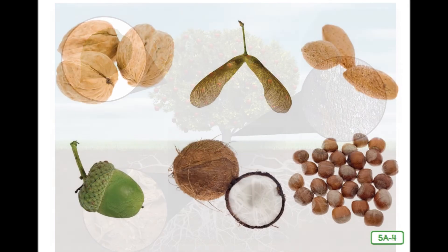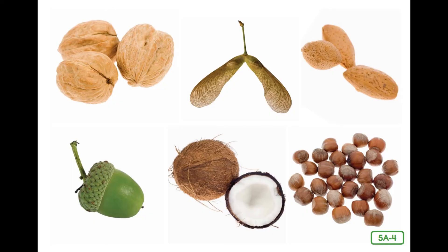Trees follow the same life cycle as other plants. Just like that of a flower, a tree's life cycle begins with a seed. Tree seeds can be as large as tennis balls or as tiny as freckles. They come in various shapes and sizes — flat, smooth, bumpy, long, or thin. Tree seeds have three main parts: the embryo or egg, the stored food inside the egg which enables the seed to grow and change, and the seed coat, which eventually falls off.